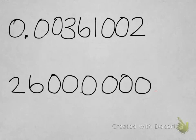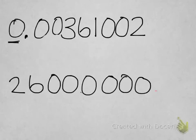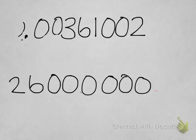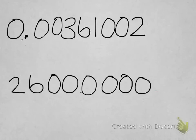Try these two problems on your own. Pause the video and restart it when you're ready to check your answers. Note: the zero before the decimal is just a placeholder to reinforce where the decimal point is — writing it with or without that zero is the same thing, but it's included so you always know where the decimal is located.